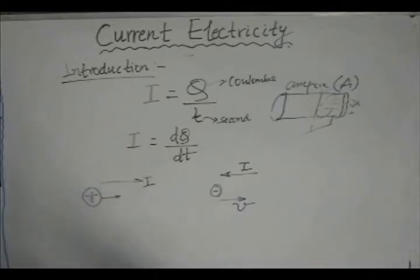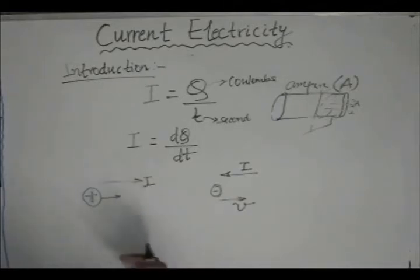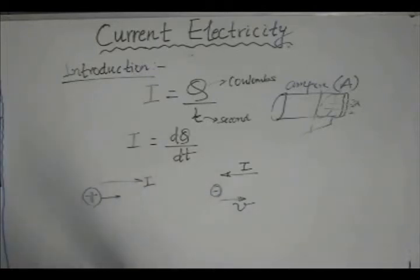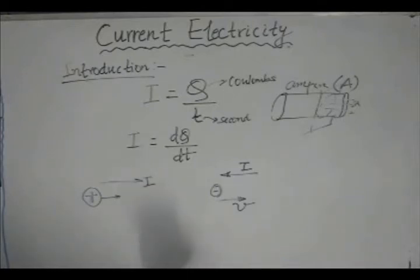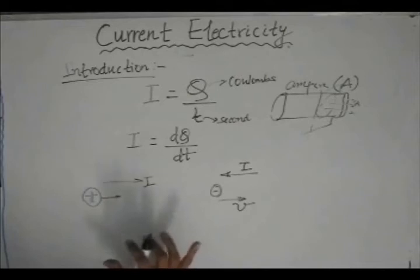We can say current is not a vector quantity because the direction only suggests the direction of flow of charges — it does not indicate a true vector direction. Furthermore, current does not obey the vector law of algebra: whatever the angle between two currents, we add them algebraically and cannot use the parallelogram law of addition. So current is a scalar quantity, and we should keep this in mind.